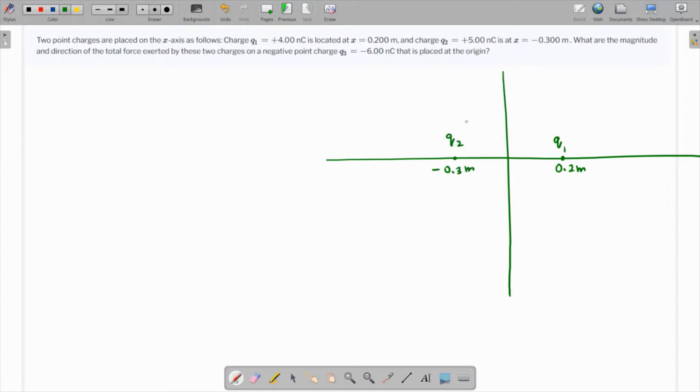Which is q2. We have to find the magnitude and direction of the total force which is exerted by these two charges on the negative charge q3 that is placed at the origin. At the origin we have q3 and we have to find the magnitude and direction of the total force.